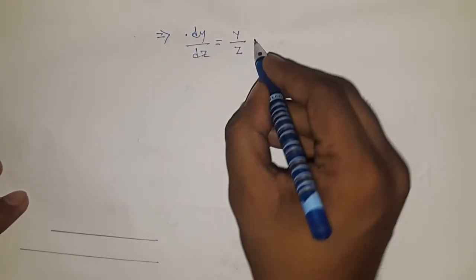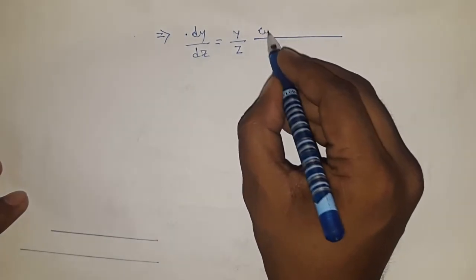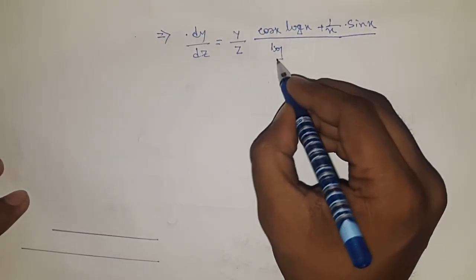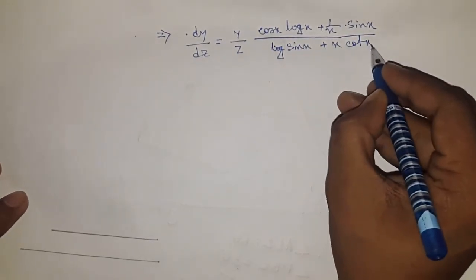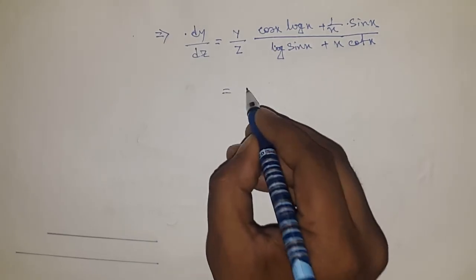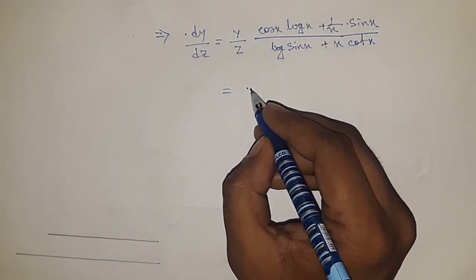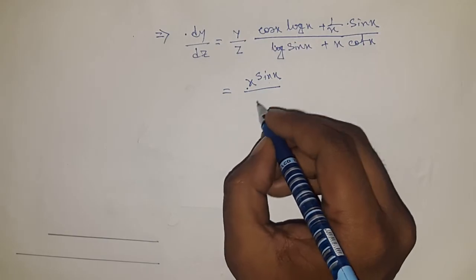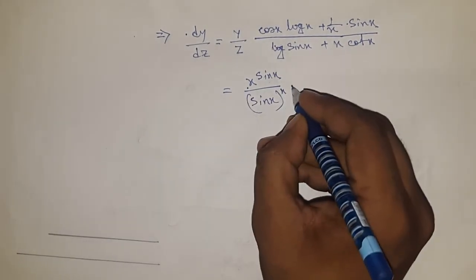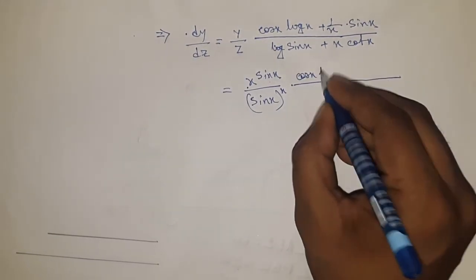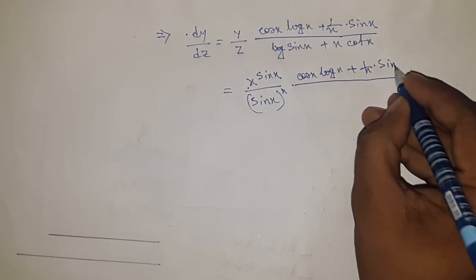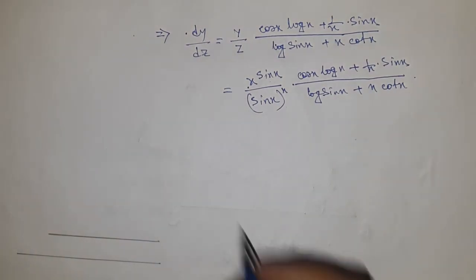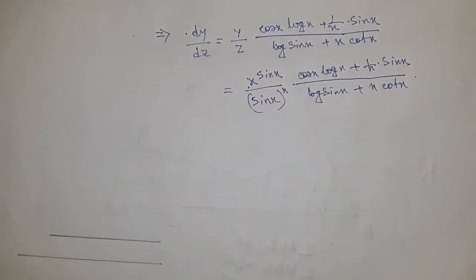This implies dy/dz equals cos x log x plus sin x by x, over log sin x plus x cot x. Now substituting: y equals x to the power sin x, and z equals sin x to the power x. So the final derivative is x to the power sin x over sin x to the power x, times cos x log x plus sin x by x, over log sin x plus x cot x. Thanks for watching.